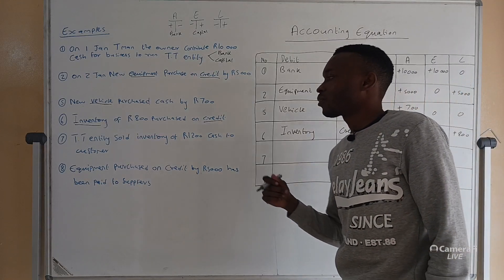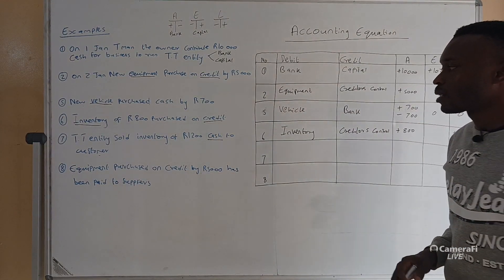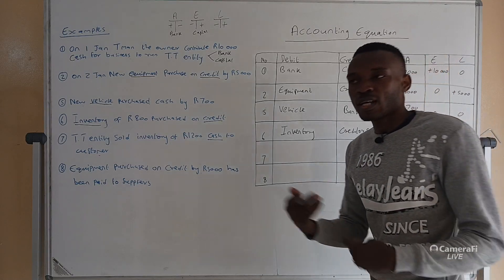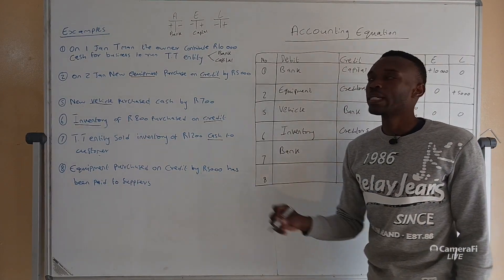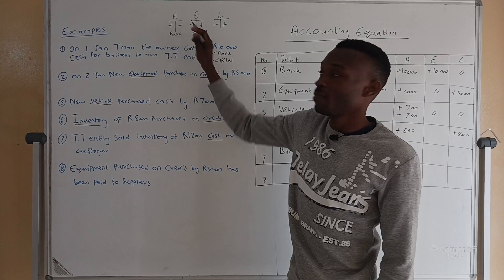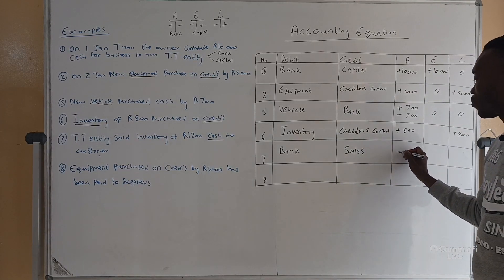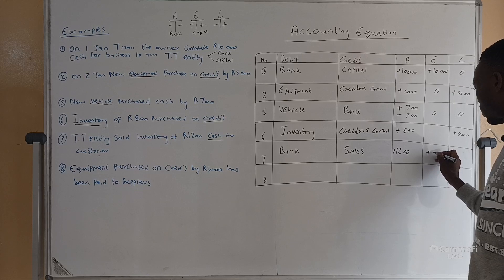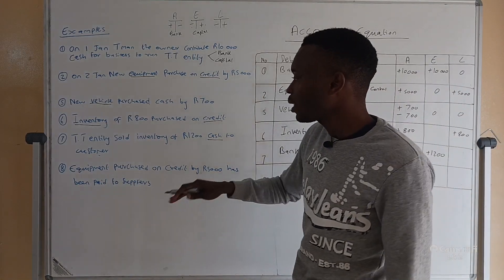Transaction number seven: TT entity sold inventory of one thousand two hundred cash to a customer. We sold inventory to a customer for cash, and we call the revenue sales. So we have sales and bank. We receive money because the customer paid us, which means our assets — bank — have increased. Sales is equity, and all income must be recorded on the credit side. So bank is debited and sales is credited, and we record plus one thousand two hundred for assets and plus one thousand two hundred for equity.